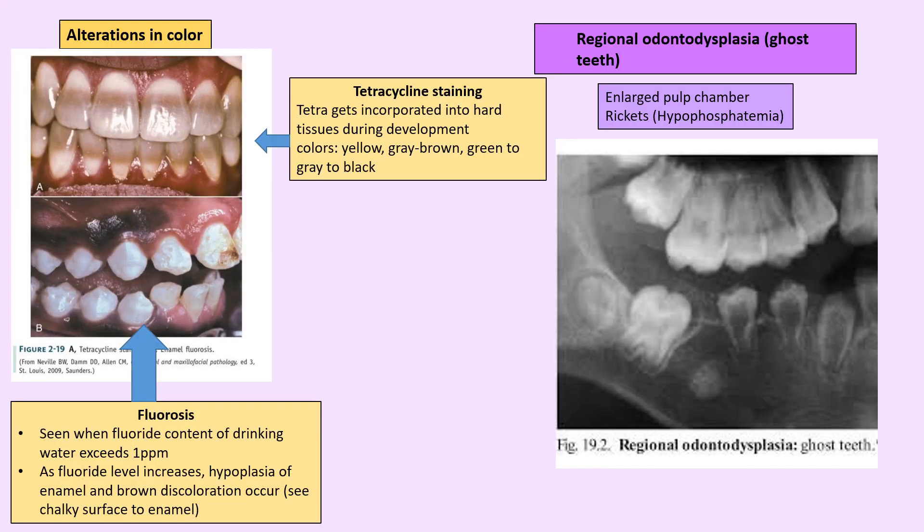Tetracycline staining shows yellowish-gray banding when a child takes tetracycline during the age when teeth are still calcifying — from the fetal age until age eight. Tetracycline binds with calcium of the tooth structure to develop a metallic complex that stains the teeth. After age eight, once all permanent teeth are calcified, tetracycline can be given without adverse staining effects.